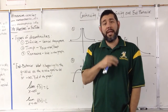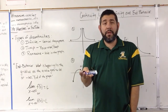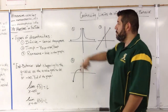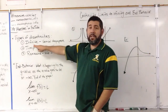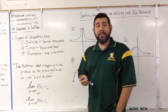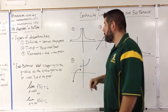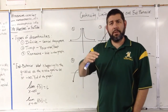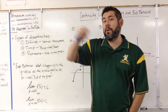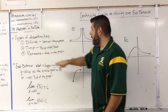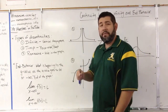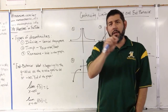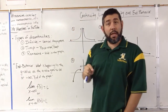Let's talk about the three types of discontinuities, look at an example of each, and then we'll talk about something called a limit and end behavior. First, the types of discontinuities: we have an infinite discontinuity, a jump discontinuity, and a removable discontinuity. Let's take a look at each one.